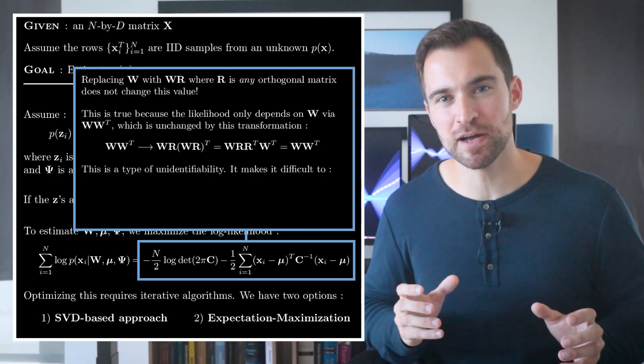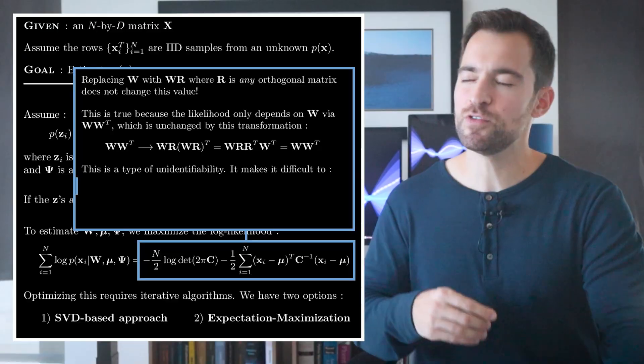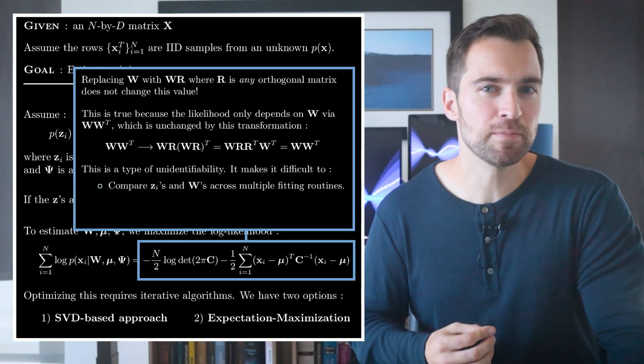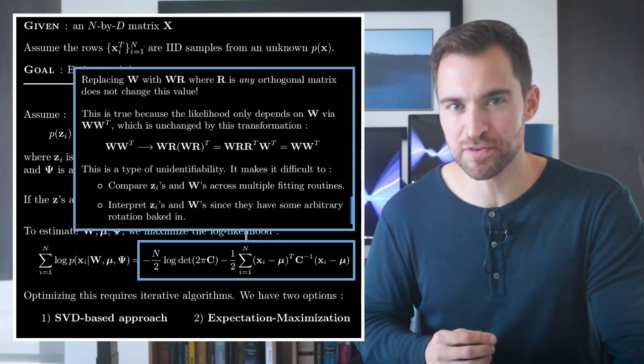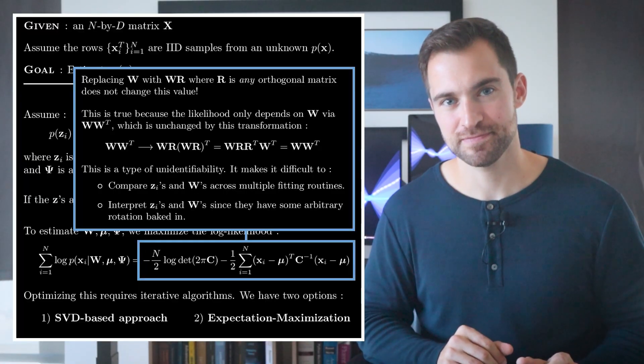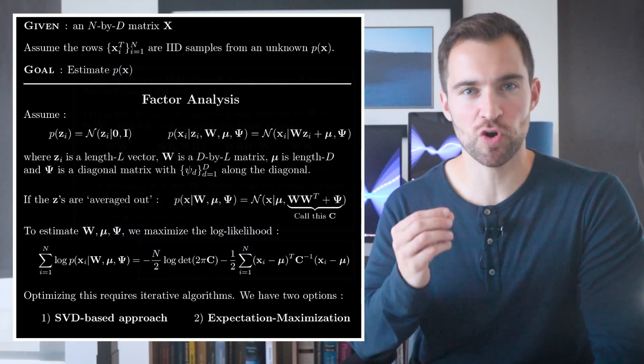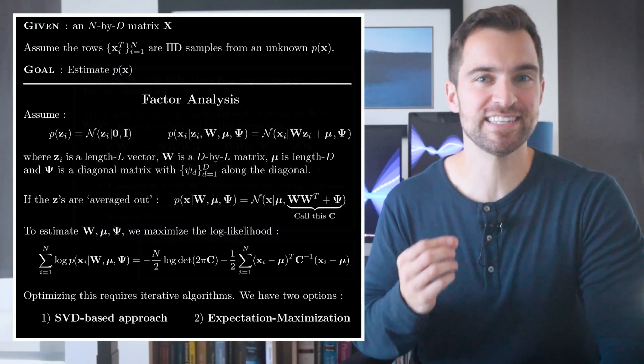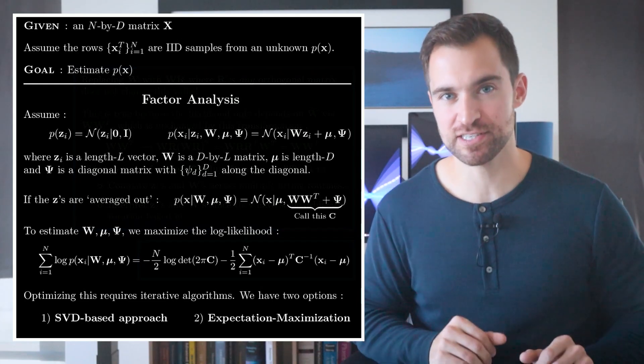So, this is a type of unidentifiability, not a good thing. For one, it means if you rerun the algorithm, you'll get different values for w and z. That makes it tricky to compare them across multiple runs. Second, it makes interpreting things difficult, since you have to ignore whatever arbitrary rotation your fitting routine imposed. But that's it for factor analysis. You now know how the model creates a distribution over X using relatively few parameters, how it can be used to generate synthetic data, and how it can be useful to infer things about X or reduce its dimensionality.